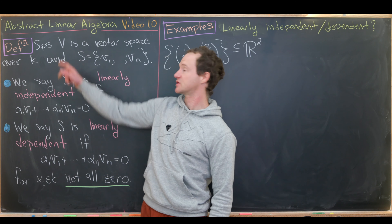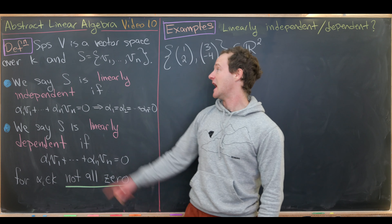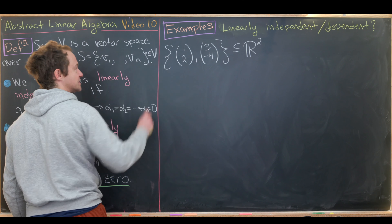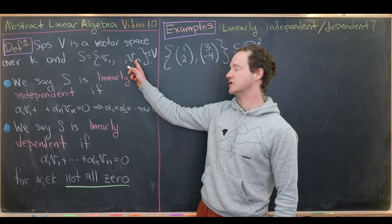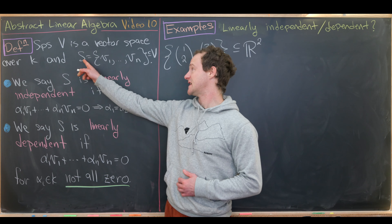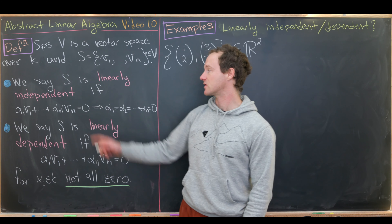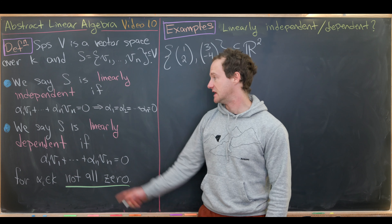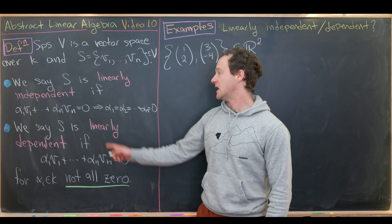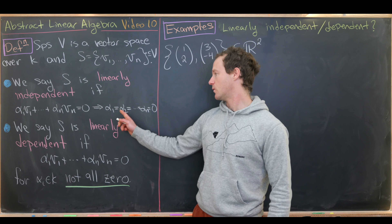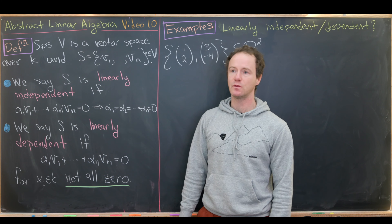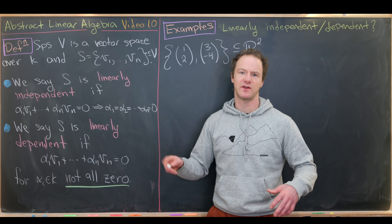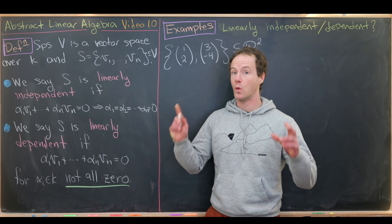We start with a vector space V over an arbitrary field K, and a set of vectors from V — a subset of V. We have a collection of n vectors in V. We say this collection is linearly independent if the equation alpha_1 v_1 + ... + alpha_n v_n = 0 only admits the trivial solution — meaning alpha_1 = alpha_2 = ... = alpha_n = 0.